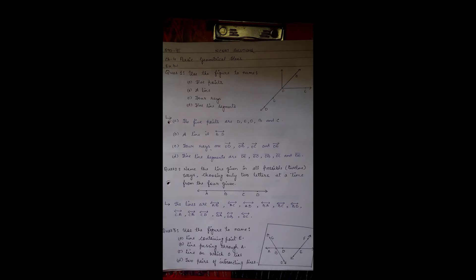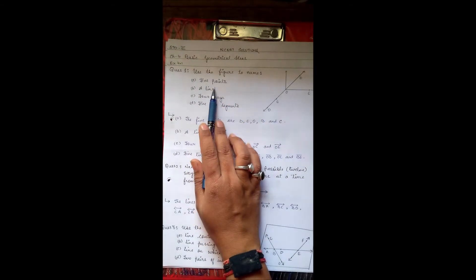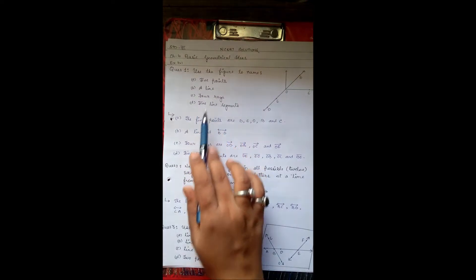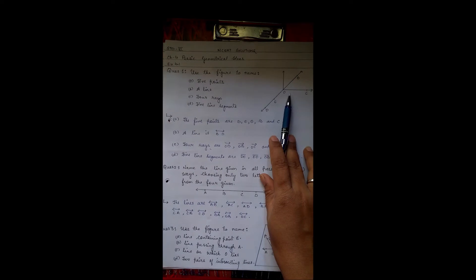Hello students, today we will see NCERT solution for standard 6, chapter 4, Basic Geometrical Ideas. In that we will see exercise 4.1. First, the first question is: use the figure to name five points, a line, four rays, five line segments. This is the given figure.